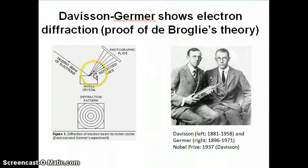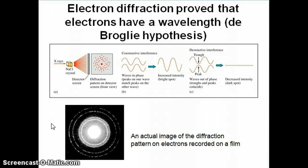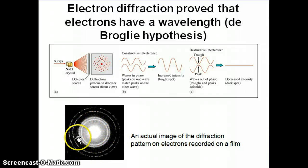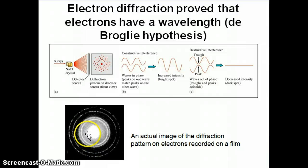If electrons are waves, you would see a diffraction pattern — and in fact they did see electron diffraction, which proved that electrons have a wavelength and behave like waves, because only wave-like objects can diffract. This proved de Broglie's hypothesis. The actual diffraction pattern looks like a ring of dark and bright spots: the dark spots represent destructive interference of the electron beam, and the bright spots represent constructive interference.